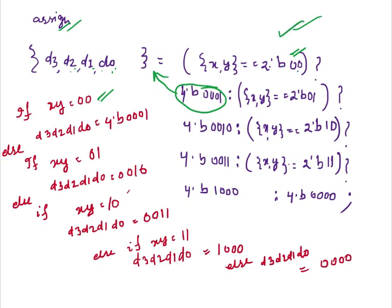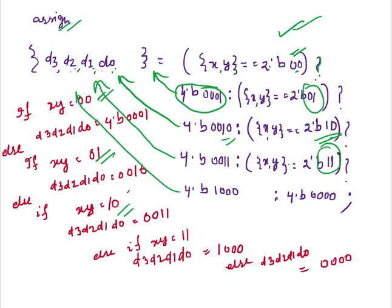Else if it is 01, then d3, d2, d1, d0 will be this one. Else if this condition is true, 10, then this one will be assigned to this one. Else if 11, then this one will be assigned. And if this is also not true, then d3, d2, d1, d0 will be 00.